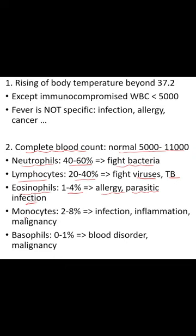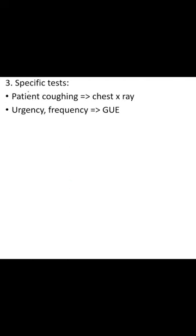Monocytes range from 2 to 8 percent and are elevated in infection, inflammation, and malignancy. Basophils range from 0 to 1 percent and are elevated in blood disorders and malignancy. You can also confirm infection by doing specific tests — for example, if your patient is coughing, you can do a chest X-ray, and so on.